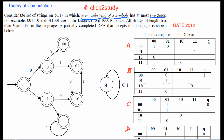The problem explains this with examples — some strings are in the language, but one is not because it contains three consecutive zeros, which is not allowed. All strings of length less than three are fine, because there is no way to get three zeros in fewer than three symbols.